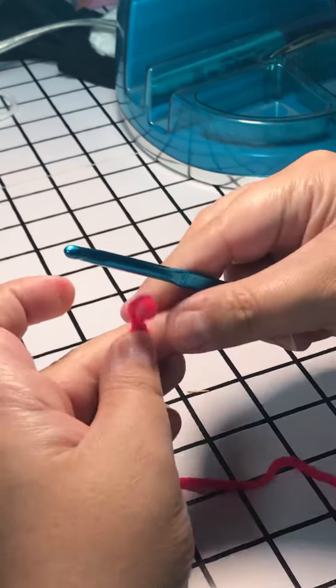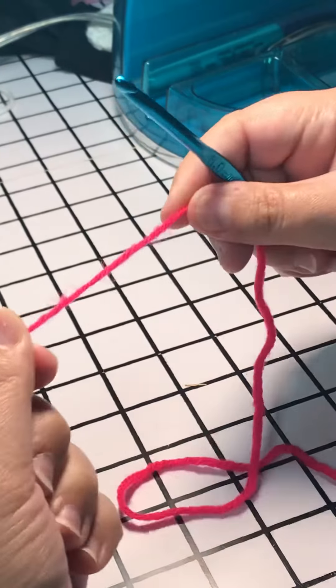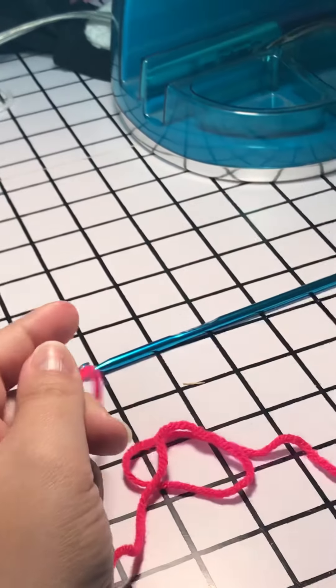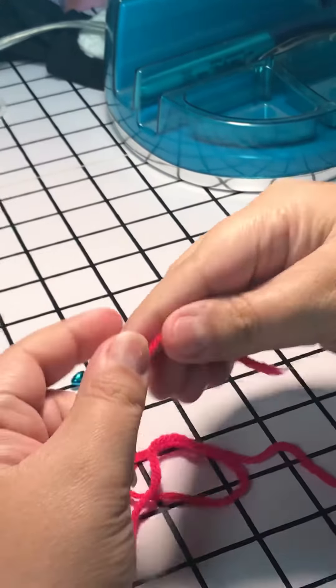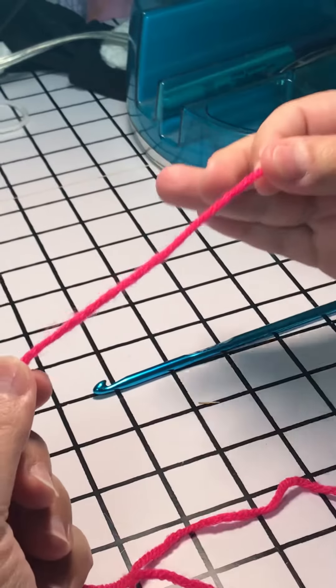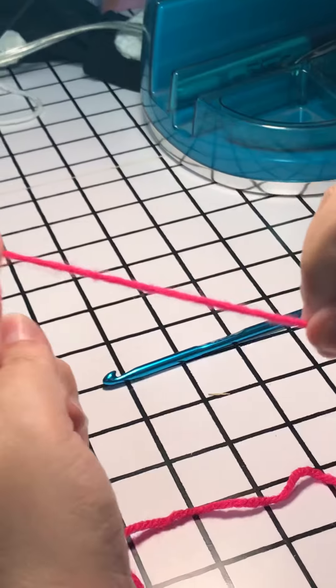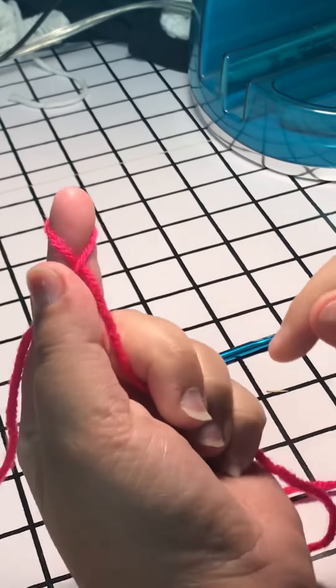So now I'm gonna undo it and I'm gonna do this for you again. So no hook in the hands. Grab the tail end of the yarn, wrap it around the index finger so it makes a crossing point.